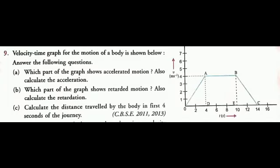Here, a velocity-time graph for the motion of a body is shown in the figure. Based on this observation, answer the following questions. Subtopic A: which part of the graph shows accelerated motion, and also calculate the acceleration. Subtopic B: which part of the graph shows retarded motion, and also calculate the retardation. And C: calculate the distance travelled by the body in the first 4 seconds of the journey.